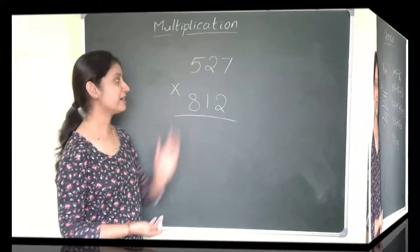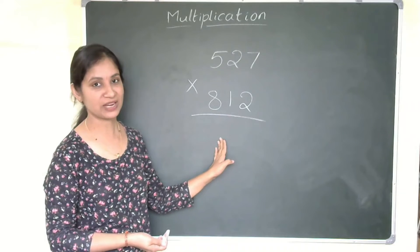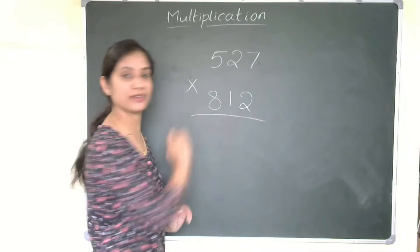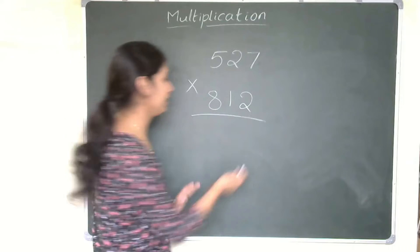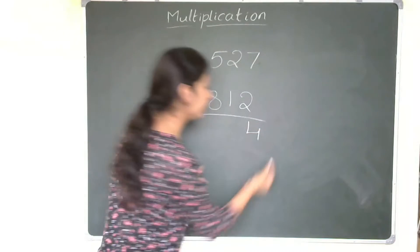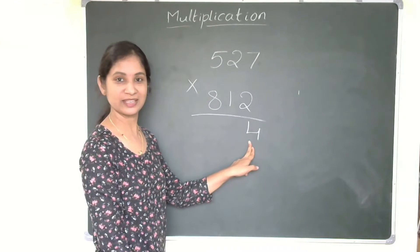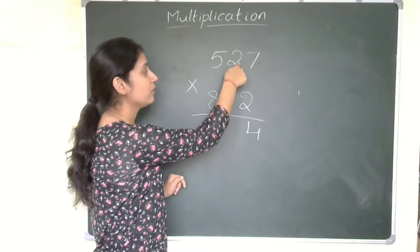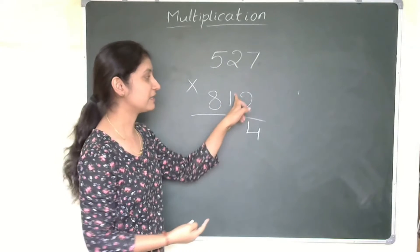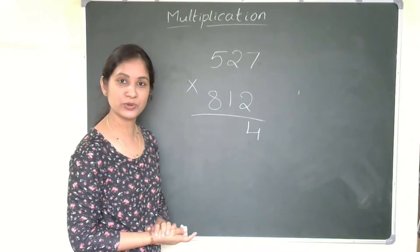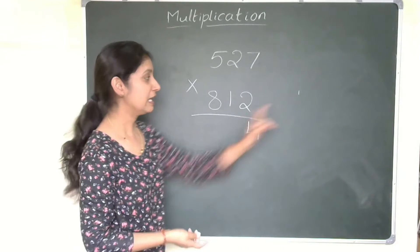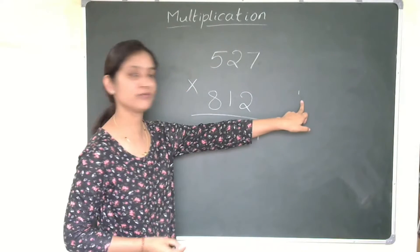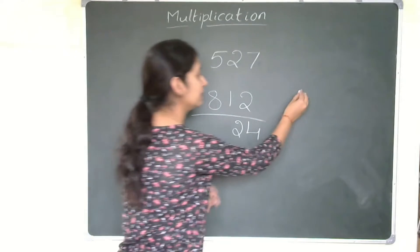Let us take 527 multiplied by 812. Our first step is, we will start with right hand side. So 7×2 we will write. 7×2 is 14. So I will write 4 here. Now 1 is carryover. I am doing here directly. Now the second step. 7×1 we will do, and 2×2 we will do. 7×1 is 7, 2×2 is 4. 7 plus 4 is 11. That 11 plus 1, 12. So I will write 2 here. Now again 1 is carryover, in 12. So 1 is carryover.